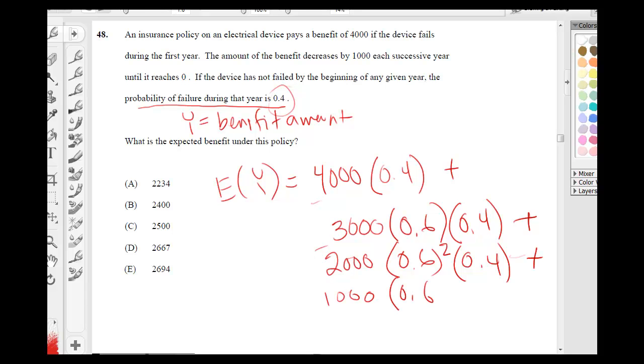So, if we multiply everything out and add everything, we're going to get that the expected value of the benefit is $2,694.